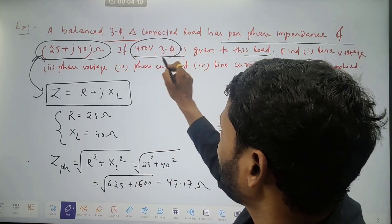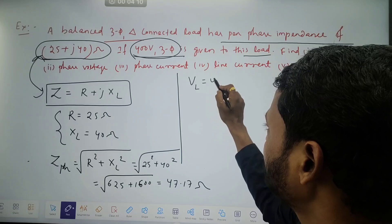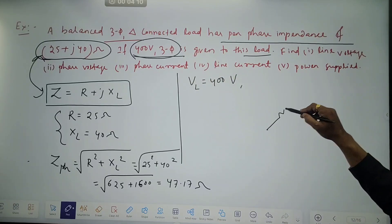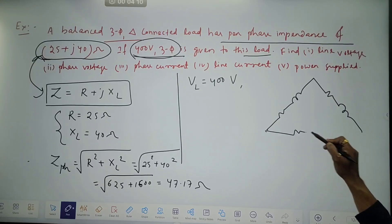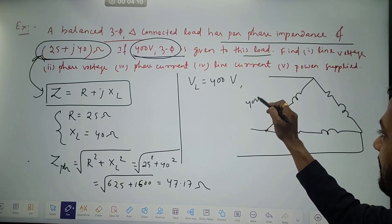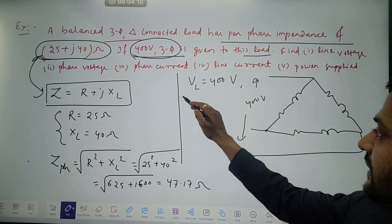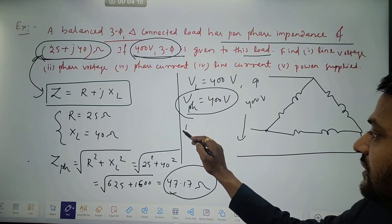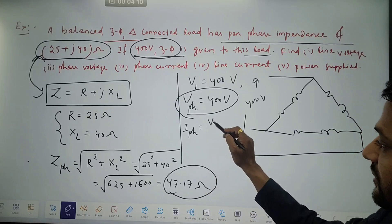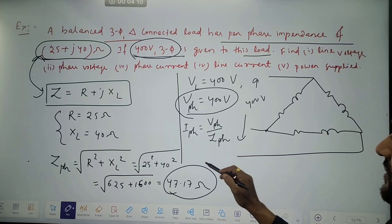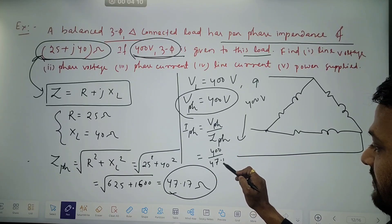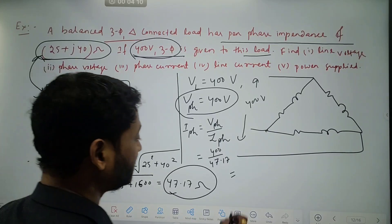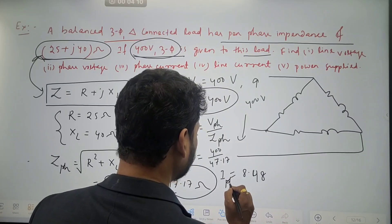As I have told, whatever voltage is given in the question, that is always line voltage. So line voltage is 400 volt. Since it is a delta connected circuit, phase voltage equals line voltage — so phase voltage is also 400 volt. Impedance per phase is 47.17 ohms, so phase current is phase voltage by phase impedance, which is 400 by 47.17, coming to 8.48 amperes.